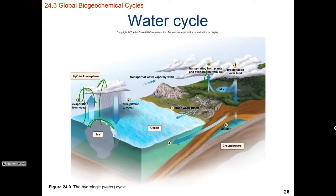After that water evaporates and makes it into the atmosphere, it then precipitates — it rains back down. As it precipitates, it can rain back into the ocean or down onto the land. If it rains on the land, it may be reabsorbed and filtered through the rocks to be stored in an aquifer, or it can run off back into the ocean. This process continually cycles water on our planet.